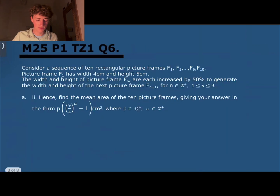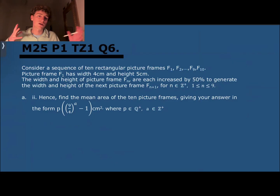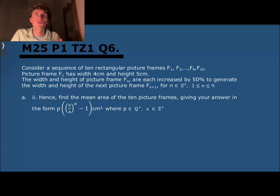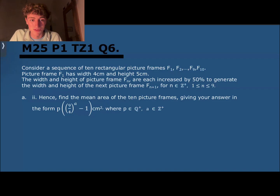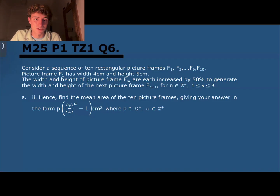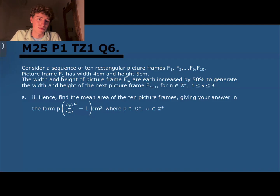The next part says: find the mean area of the 10 picture frames, giving your answer in a specific form. To calculate the mean, we need to calculate the sum of the 10 terms and then divide by 10 — that's the definition of the mean. Thankfully, for the geometric sequence, we also have a formula in the data booklet for the sum of n terms.